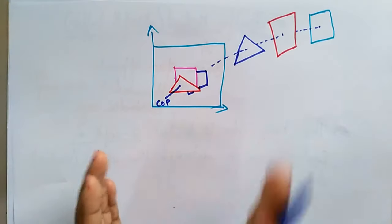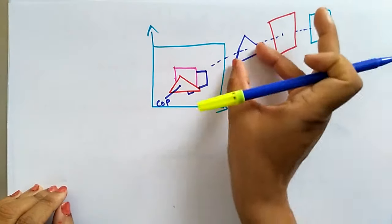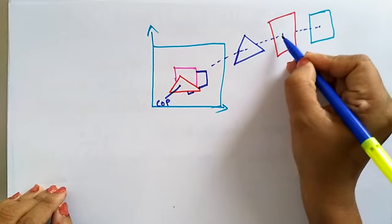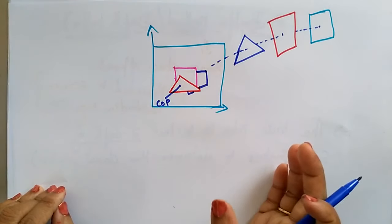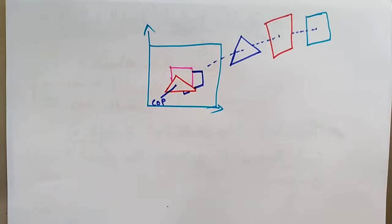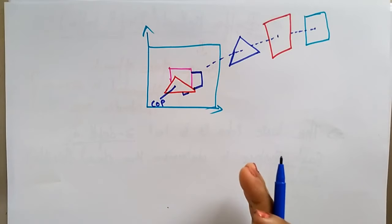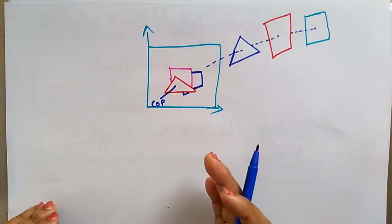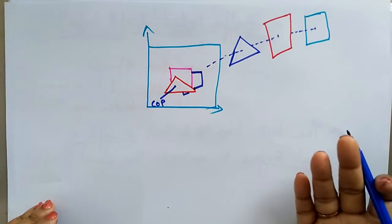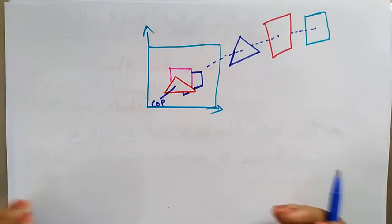In this method, each surface is processed separately, one pixel position at a time across the surface. It compares the surface depth at each pixel position at the projection plane. This method is applied very efficiently on polygon surfaces. The surfaces can be processed in any order — first this surface, then that one — you can take the surfaces in any order. To overwrite the closer polygons from the far ones, two buffers are used.